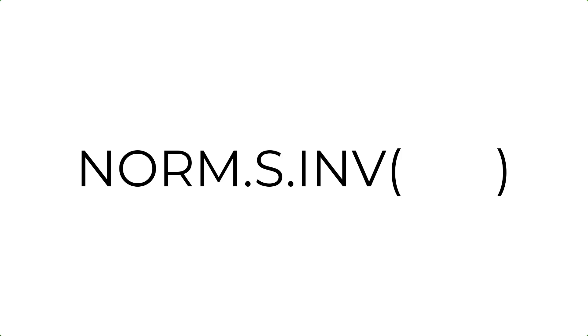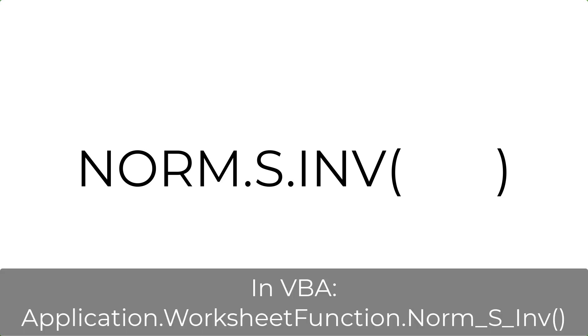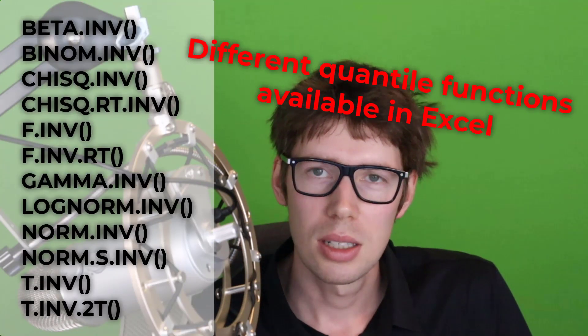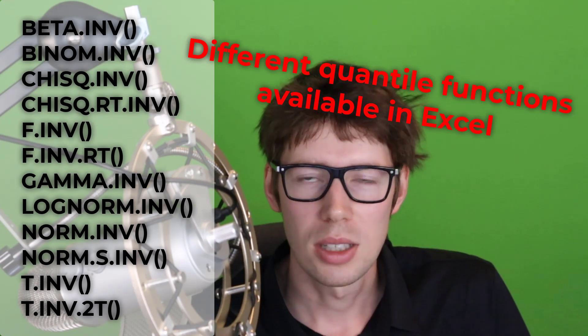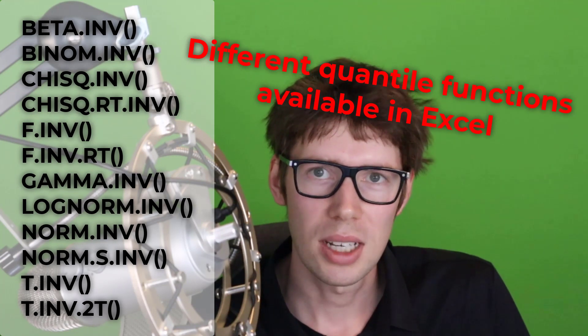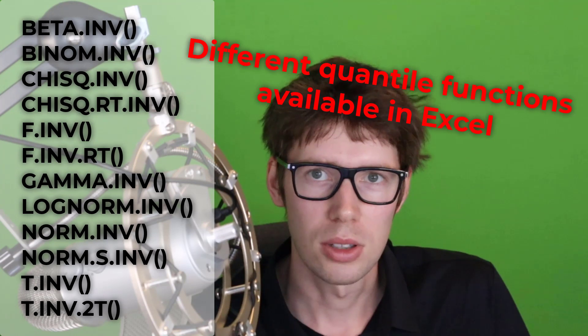So in the worksheet, you just use norm.s.inv. And if you're using VBA, it is basically the same, but slightly different. And the only input that this function requires is the output of the pseudo random number generator. Now in this video, we are interested in simulating IQ, so we only need the normal distribution. But you can generate random numbers from other statistical distributions too, because Excel provides several different quantile functions.